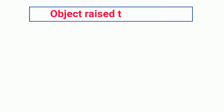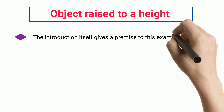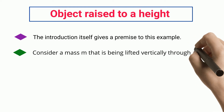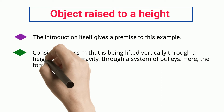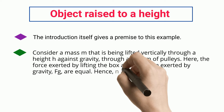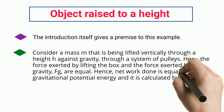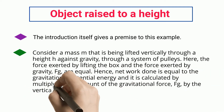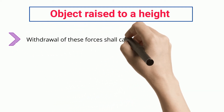Consider a mass m that is being lifted vertically through a height h against gravity through a system of pulleys. The force exerted by lifting the box and the force exerted by gravity fg are equal, hence net work done is equal to the gravitational potential energy. It is calculated by multiplying the gravitational force fg by the vertical distance h that the weight has covered.